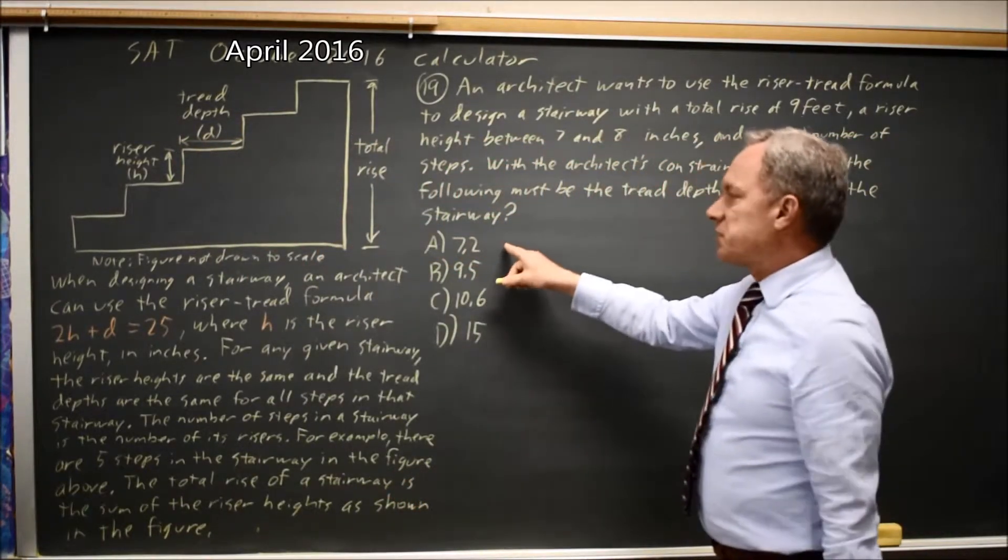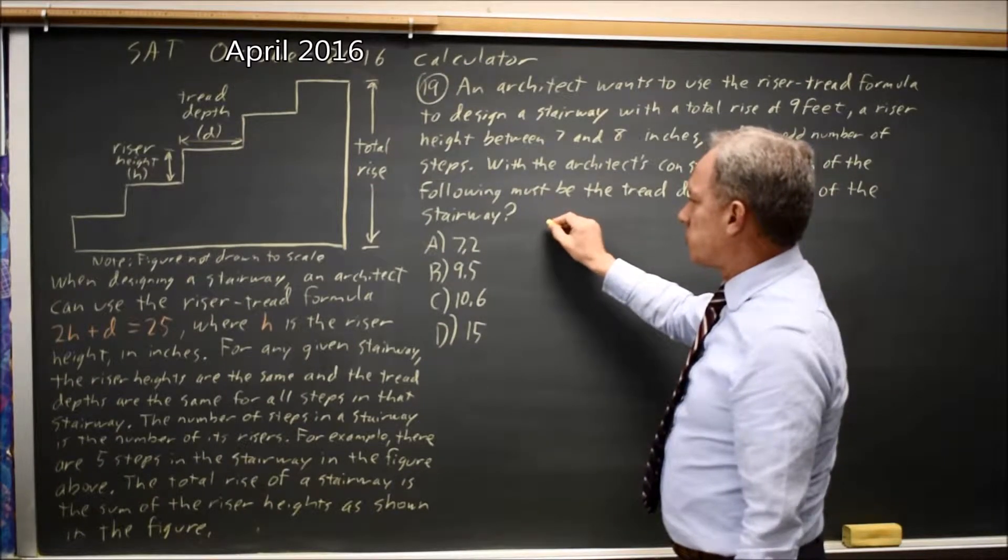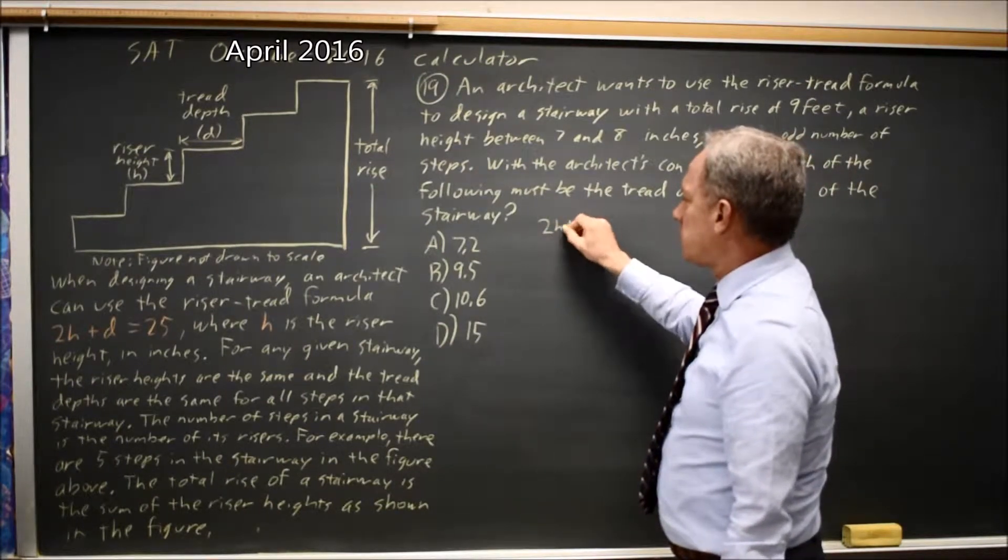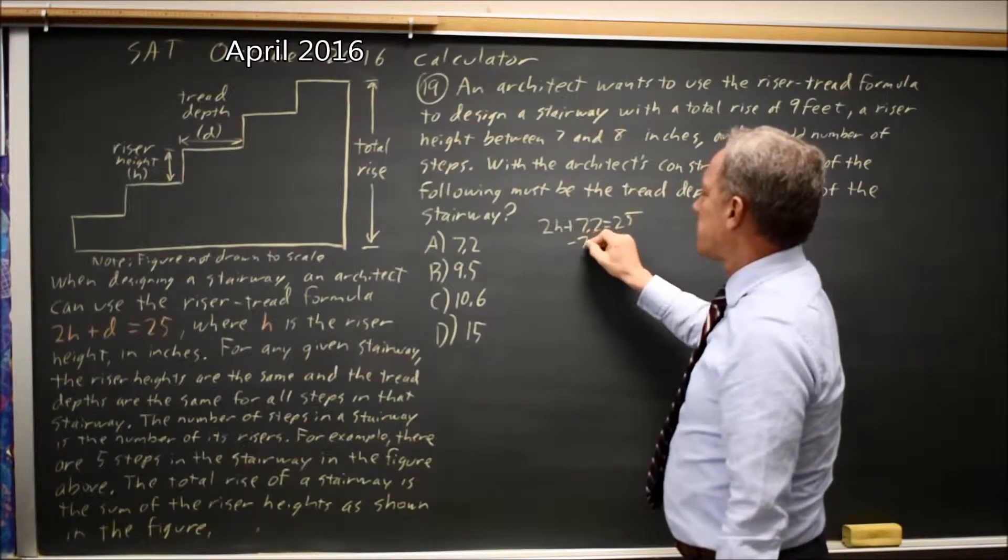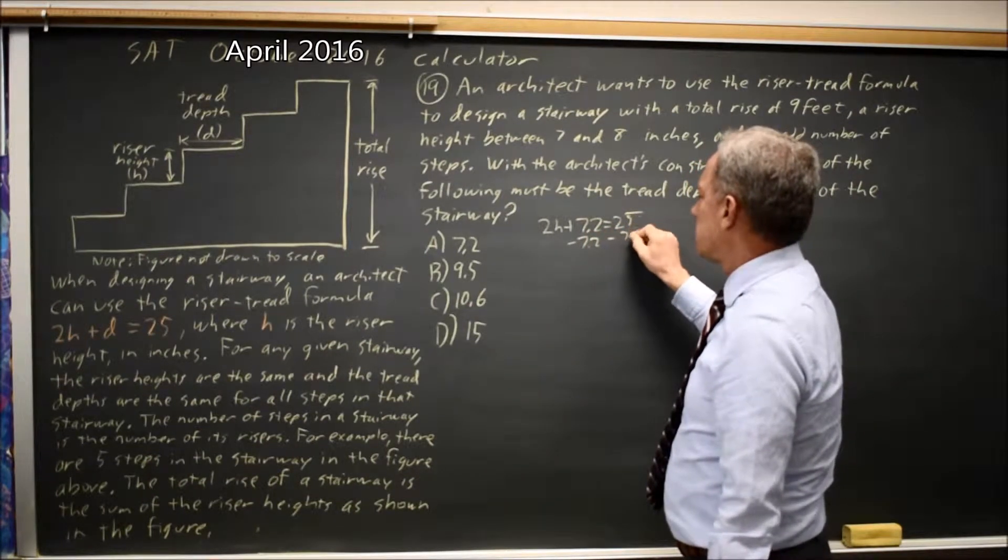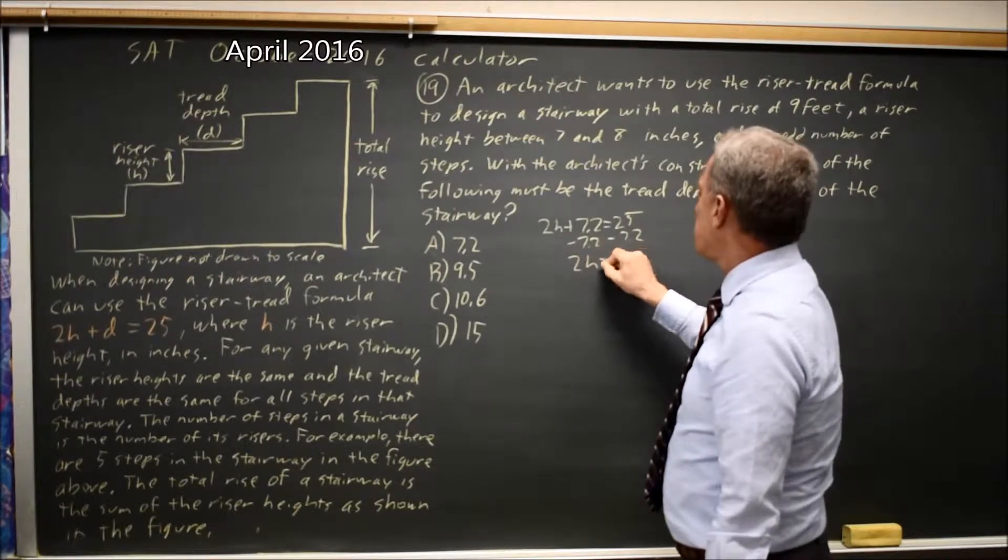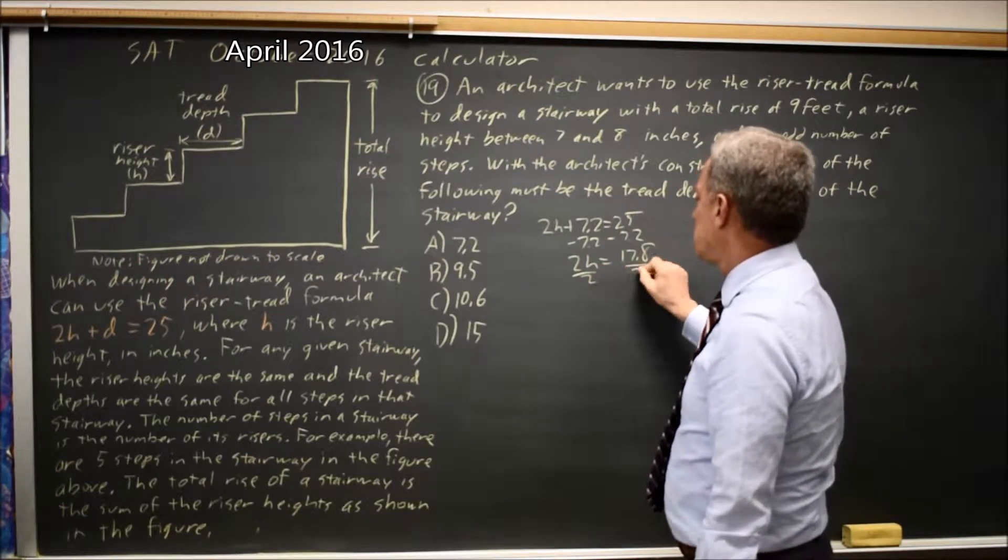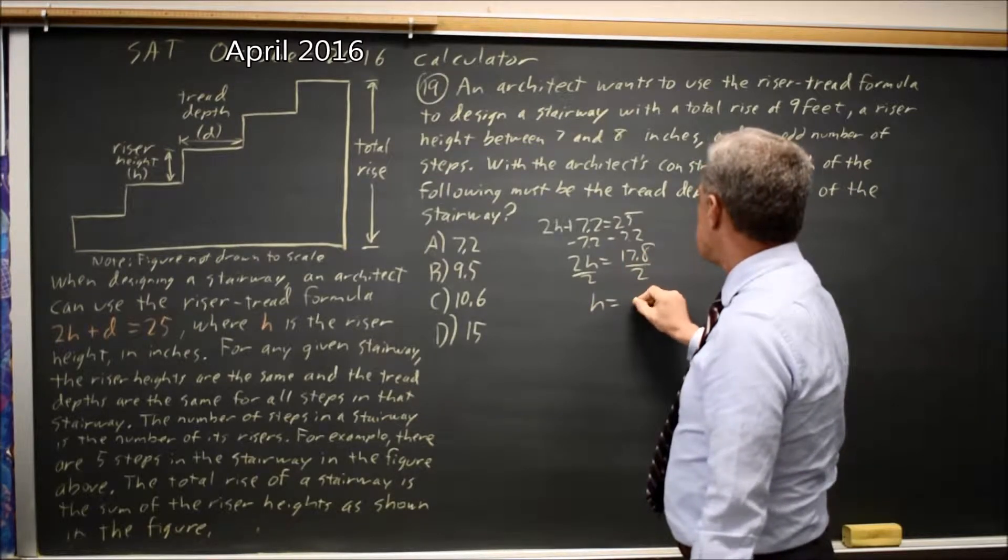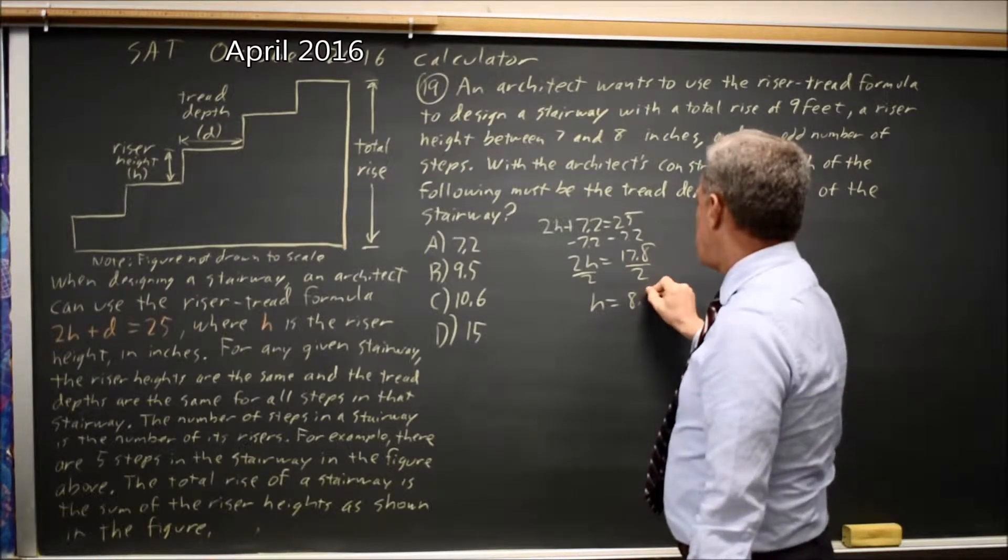If I try 7.2 in the riser-tread formula, 2H plus 7.2 equals 25. Subtract 7.2 from both sides. 2H equals 17.8 over 2. H equals 8.9.